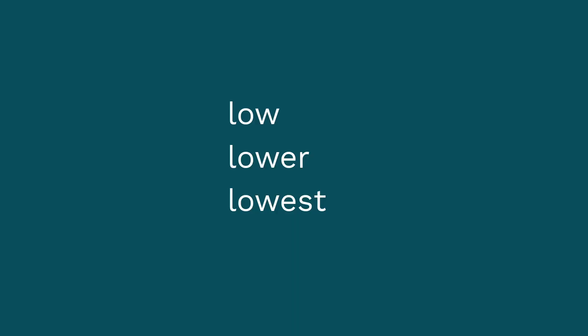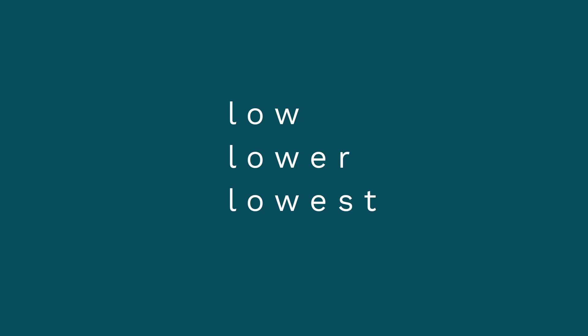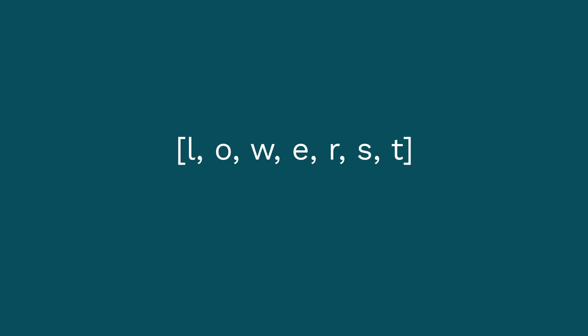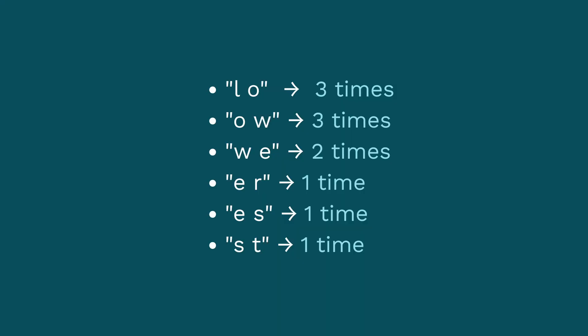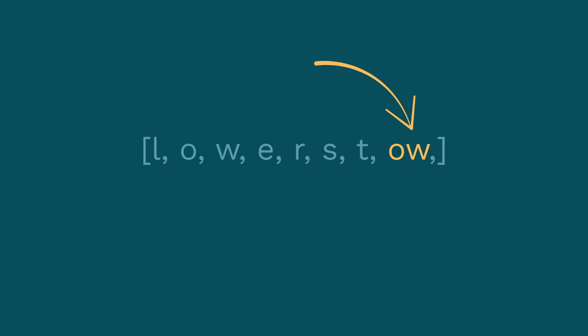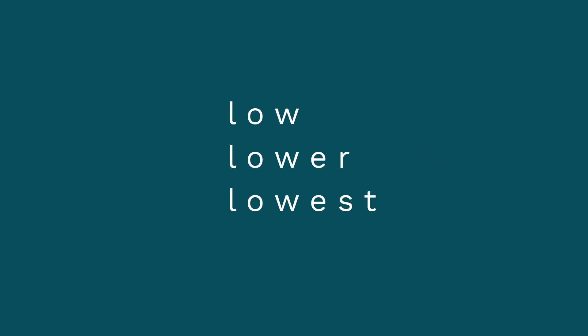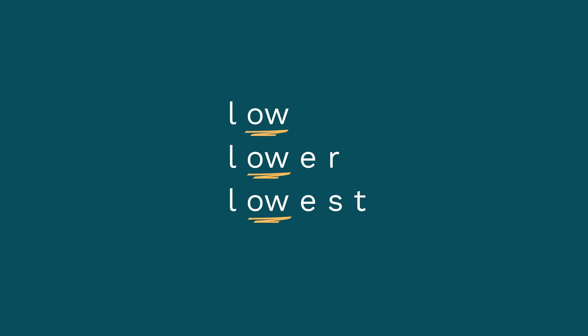Let's walk through this using a very simple body of text with just three words: low, lower, lowest. The first thing we do is break these words into individual characters, giving us an initial vocab list of the characters L-O-W-E-R-S-T. Now we count up the common pairs: L and O appear three times, O-W appear three times, W-E appear two times, and so on. We pick the most common pair — O and W — and create a new token called OW, then add that to our list.